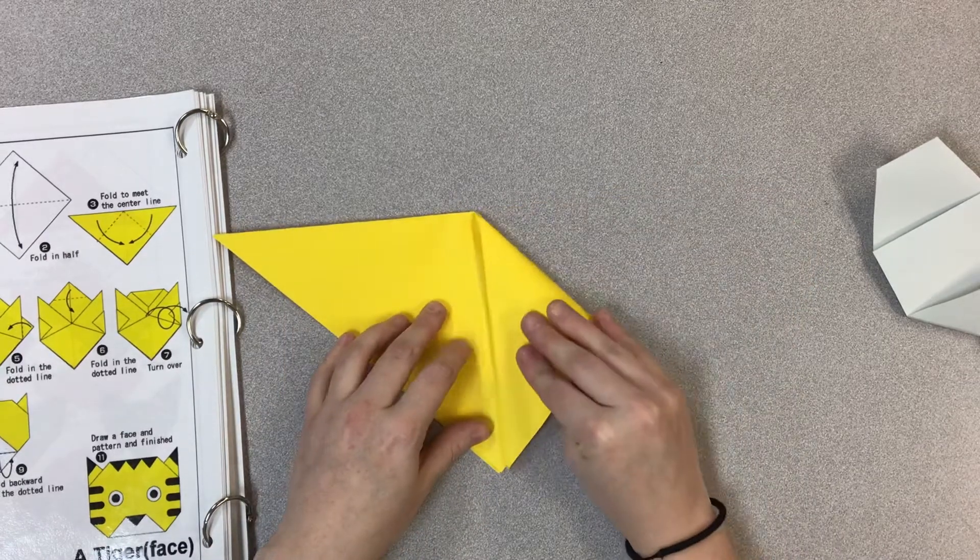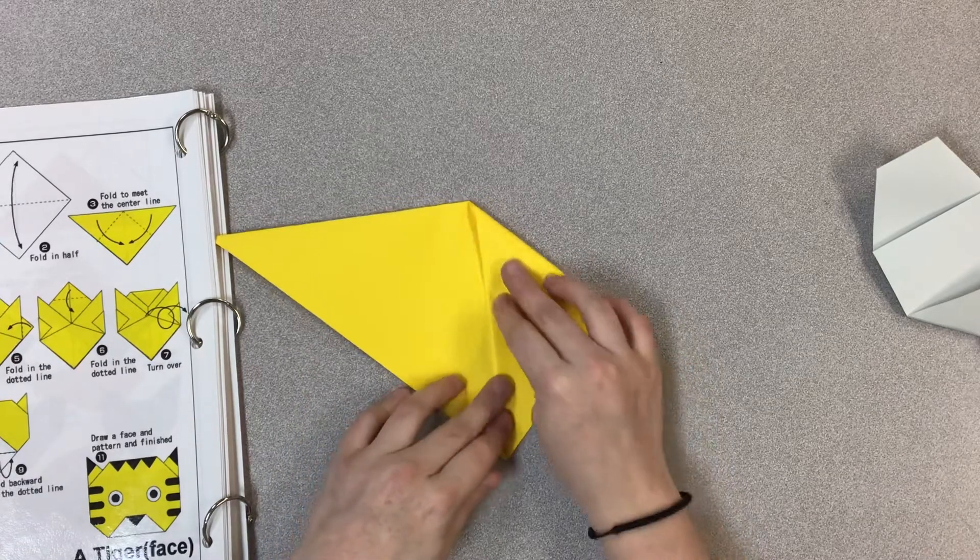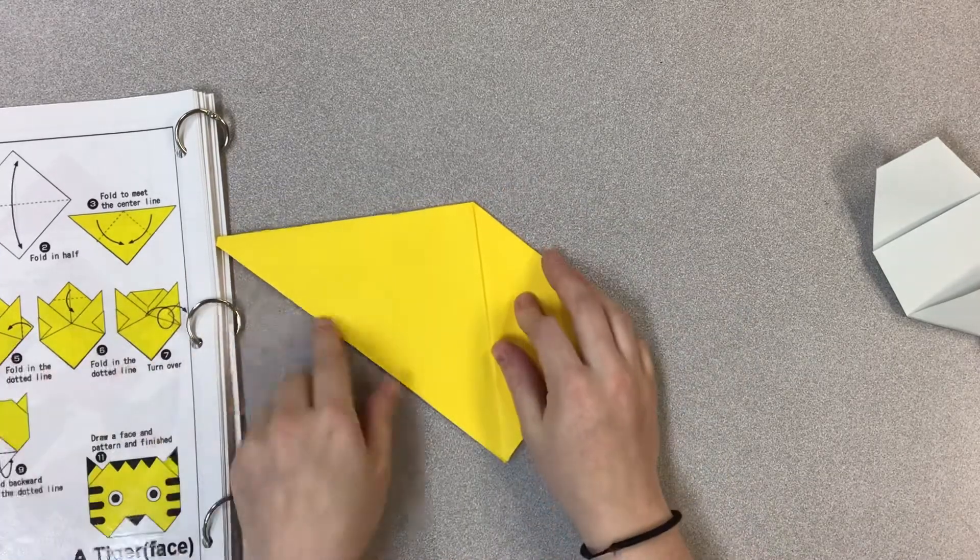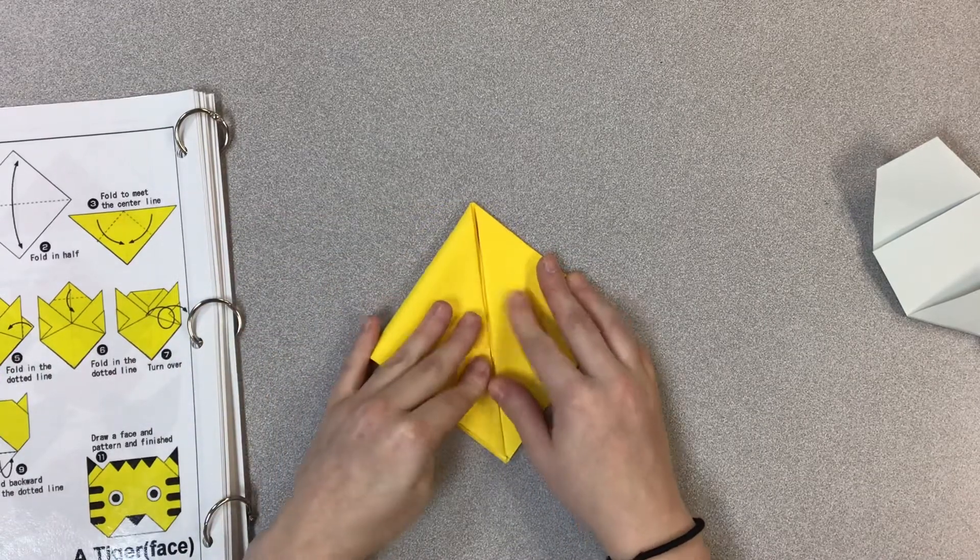So I'm taking it, flipping it, so this line gets lined up in the middle. And then I'm going to do the same thing for the other side. Take this point, flipping it down to line up.